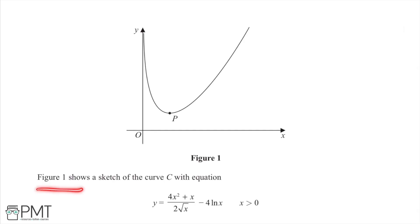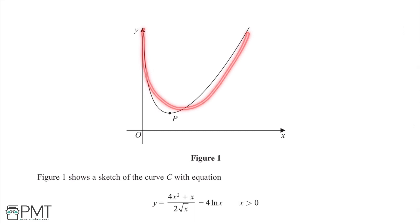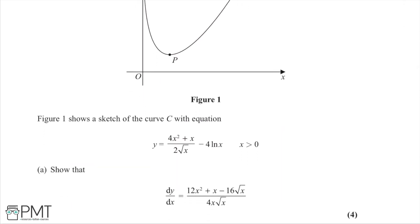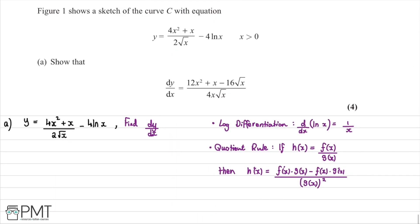In this question, we have curve C with equation y = (4x² + x)/(2√x) − 4·ln(x) for x > 0. In part a, we must show that dy/dx = (12x² + x − 16√x)/(4x·√x), worth four marks. We split the differentiation into two parts: the ln term and the fraction.